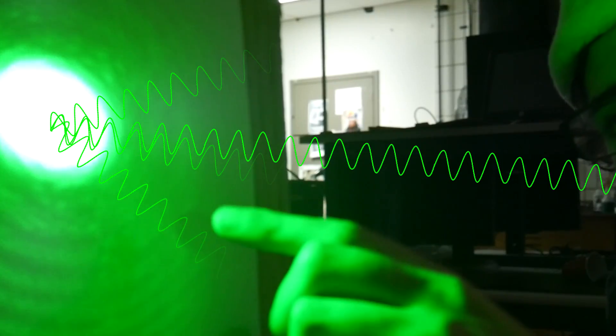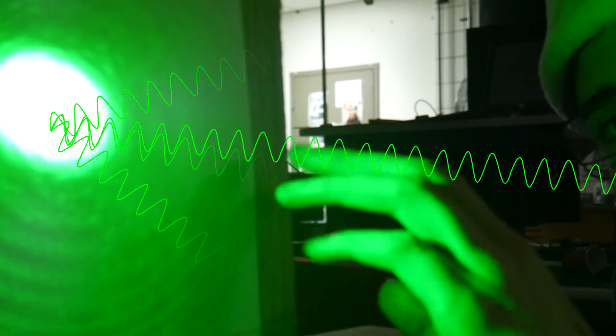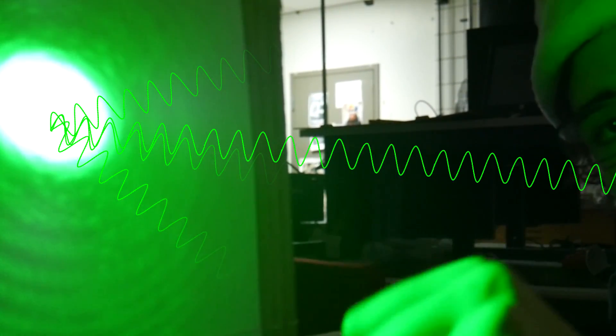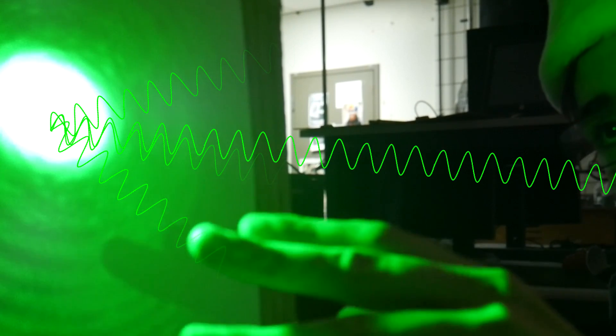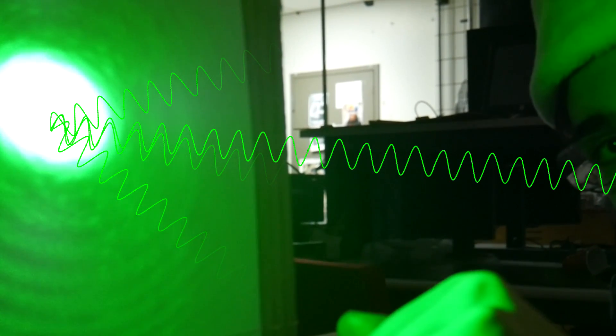Anyway, so when coherent light hits a matte object such as a sheet of paper, what we get is a thing called diffuse reflection, which means that the laser beam scatters randomly afterward. And this is where interference takes over.